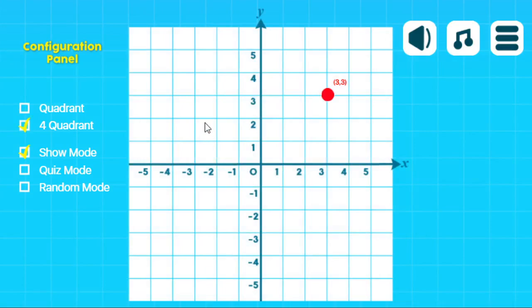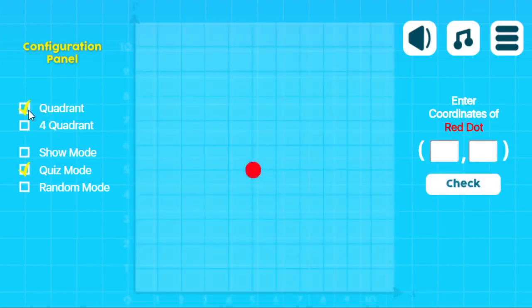Four quadrants are going to work the same, tells you the ordered pair there. Let's go ahead and take a look at quiz mode, and we'll go back to one quadrant.